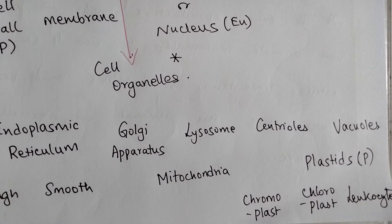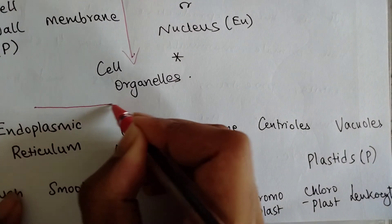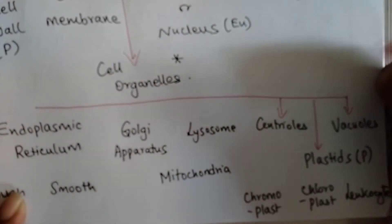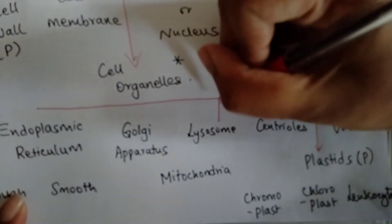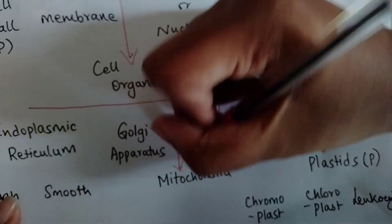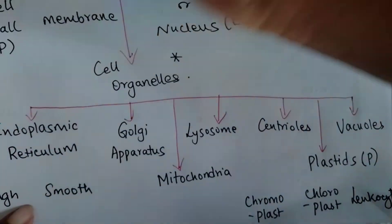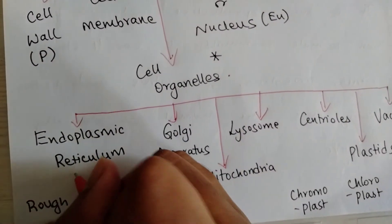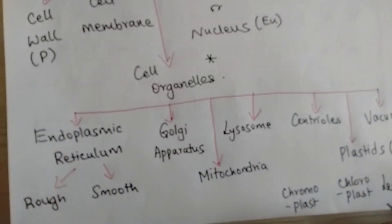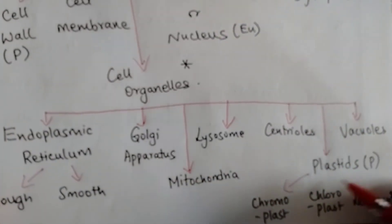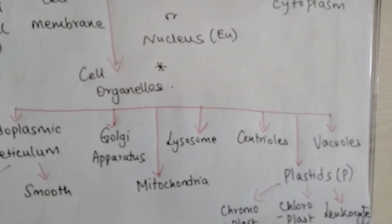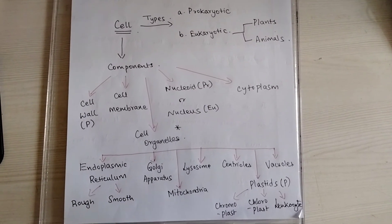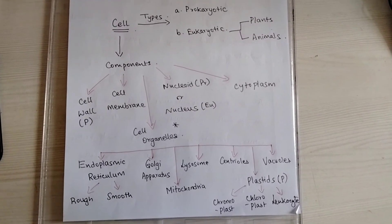Now we're going to map them — first the types of cell organelles and then the subtypes. If you want a more detailed explanation on the organelles in the cell, the link to that video is in the description. We've done mapping the types, now we'll map the subtypes. Once we're done with this, we've completed the components of the cell. Here is a look at the entire concept map we just made.